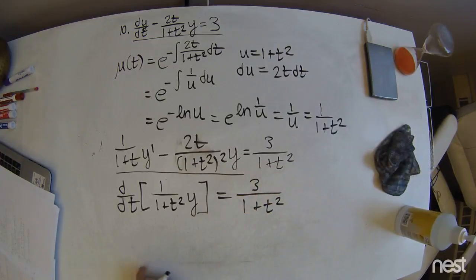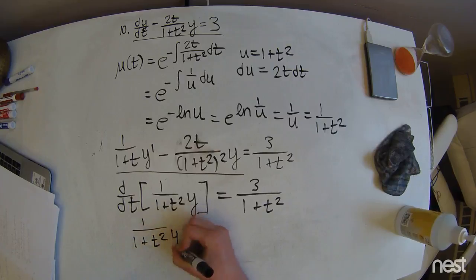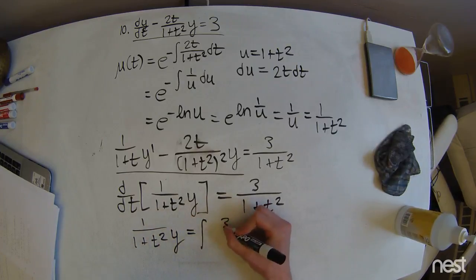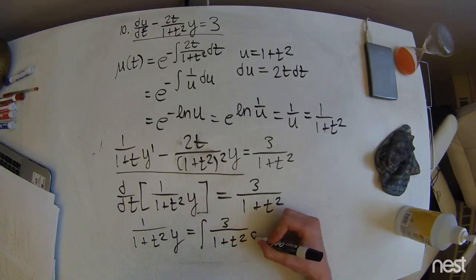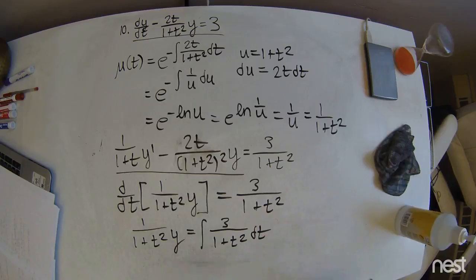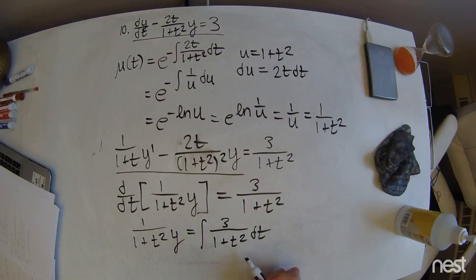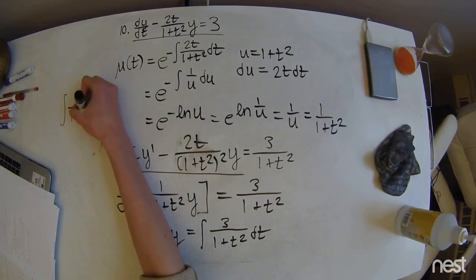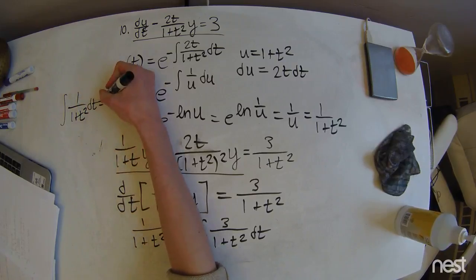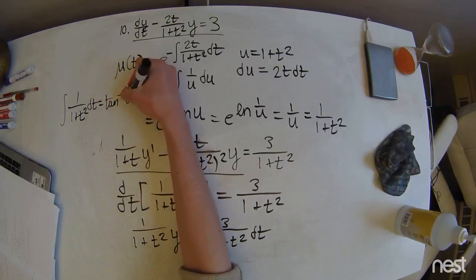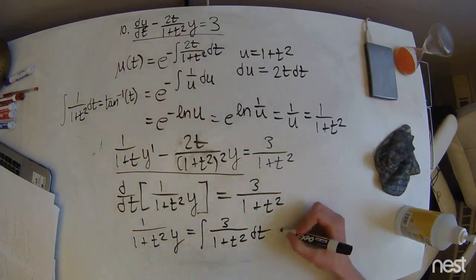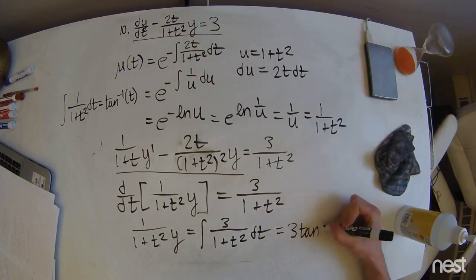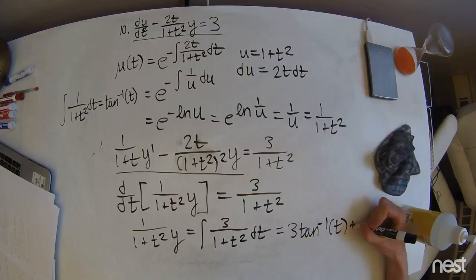Then we can go ahead and integrate both sides with respect to t. To do this integral, we just remember that the integral of 1 over 1 plus t squared is going to equal the inverse tangent function of t. So this equals 3 arctan(t) plus c.